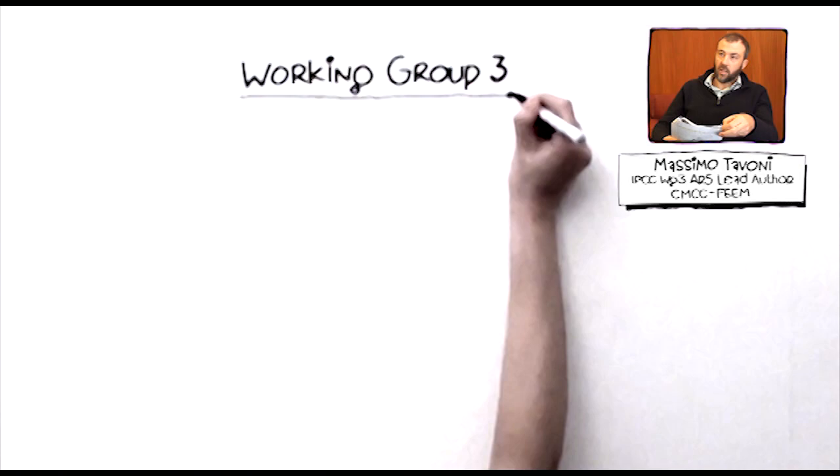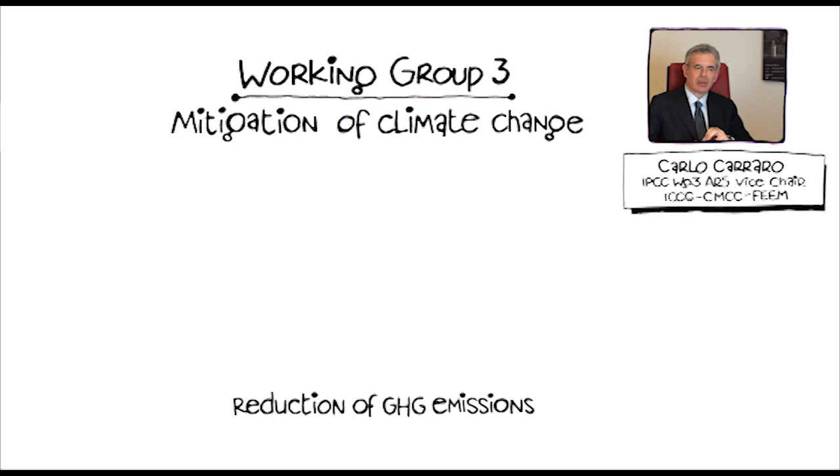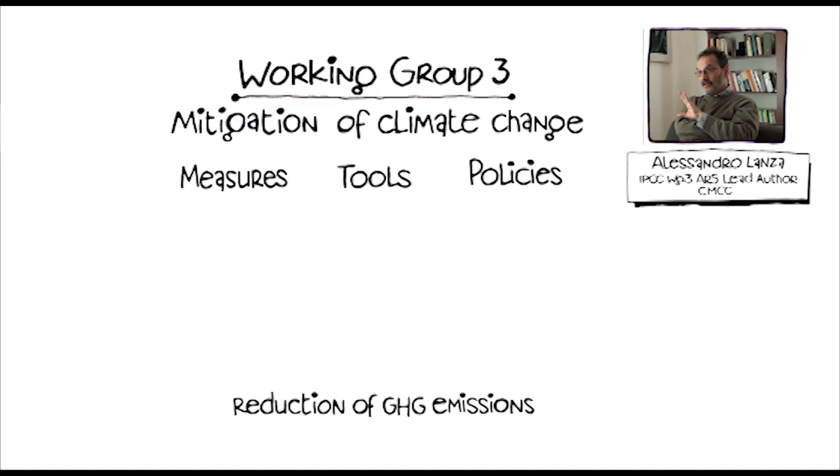IPCC has three working groups: one is on the science, the second is on the impact, and this one looks at the solution space. So what shall we do if we want to develop a strategy to protect ourselves against climate change? Mitigation simply means reduction of greenhouse gas emissions. In order to achieve carbon reduction we have different instruments.